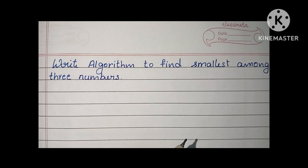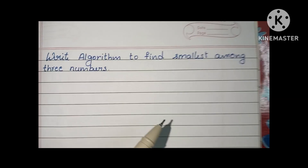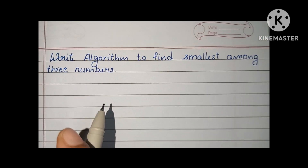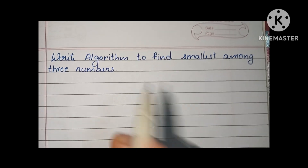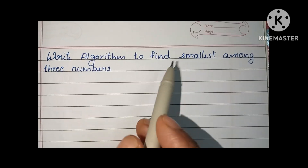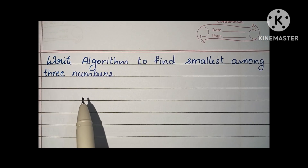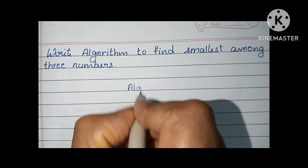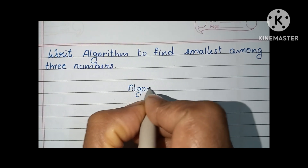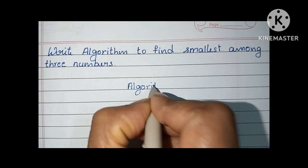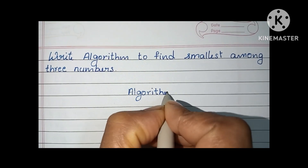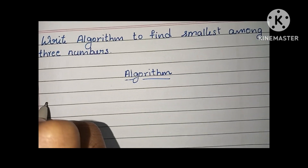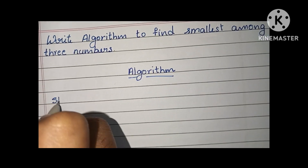Hi guys, in this video we are going to learn how to write an algorithm to find the smallest among three numbers. An algorithm is a step-by-step process to solve a problem.